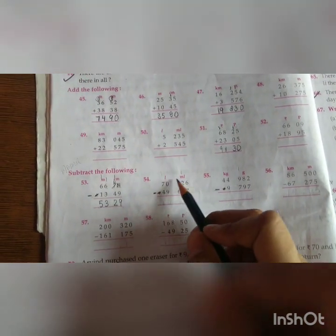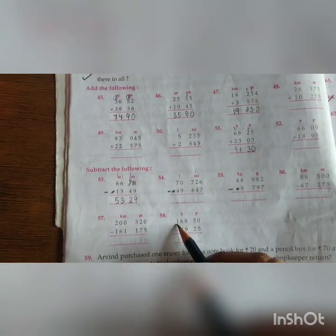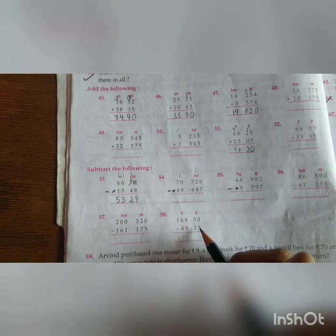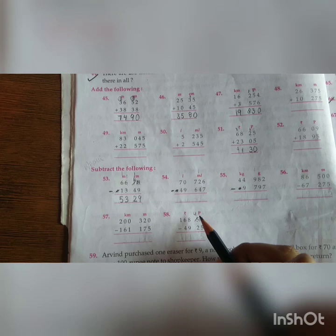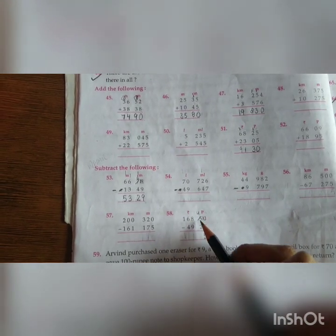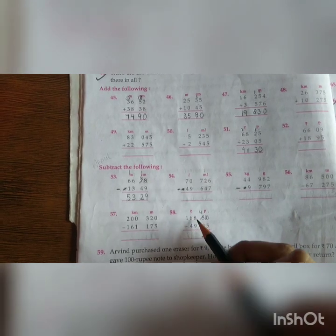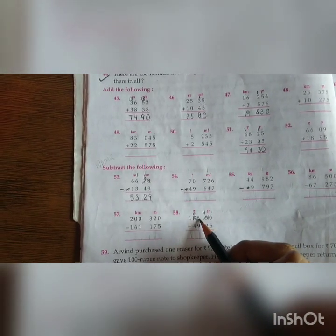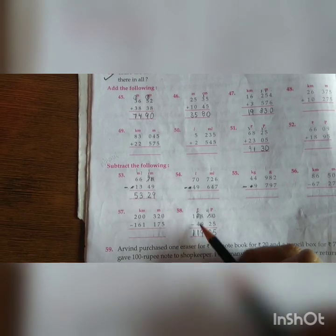Similarly, you will subtract these numbers. Let's say we have to subtract forty-nine rupees, twenty-five paise from one hundred sixty-eight rupees, fifty paise. So we cannot subtract five from zero. We will make it ten. We will borrow one. Five will become four. Ten minus five, five. Four minus two, two. We cannot subtract nine from eight. So it will become five. Eight will become eighteen. Eighteen minus nine, nine. Five minus four, one. And one. So your answer will be one hundred nineteen rupees and twenty-five paise.